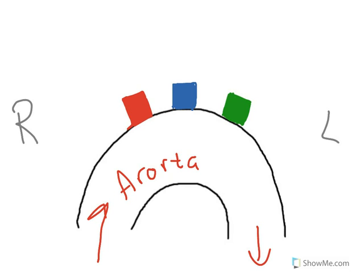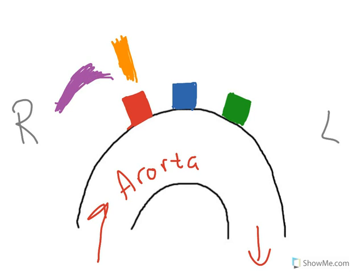The brachiocephalic trunk will bifurcate — it splits in two. One branch goes to the head as our right common carotid artery. The other goes into the shoulders underneath the clavicle as the right subclavian artery. So on your heart models, the three blood vessels on the aortic arch are: first, the brachiocephalic trunk on the far right; moving left to the middle, the left common carotid artery; and farthest to the left, the left subclavian artery. Remember, the brachiocephalic trunk bifurcates and becomes those two vessels on the right side.